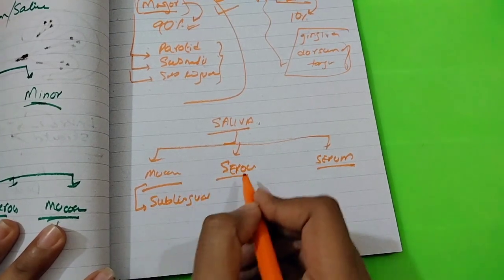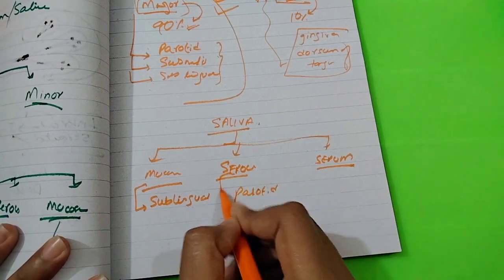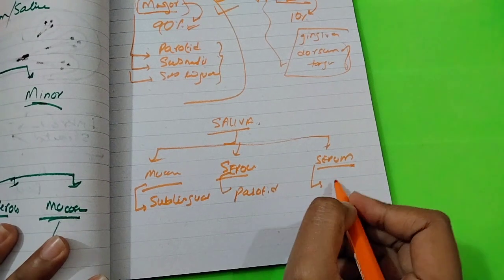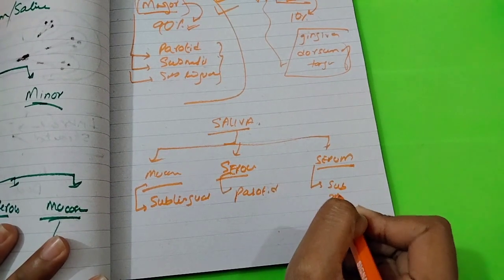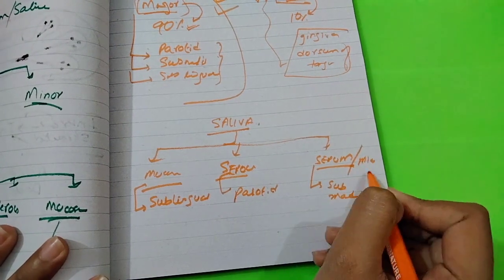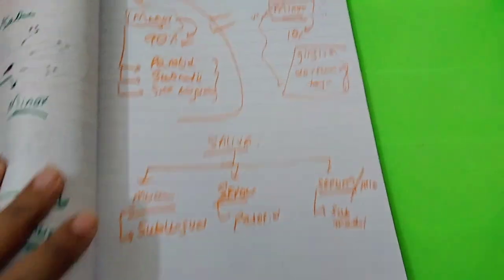Sublingual gland secretes mucous saliva. Parotid gland secretes serous saliva. Submandibular gland secretes seromucous saliva. You can also say this is mixed saliva with both serous portion and mucous portion. Here we have the classification.